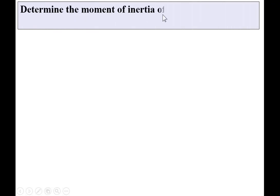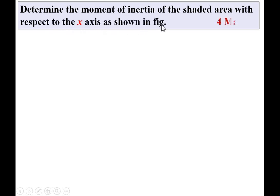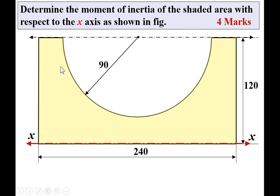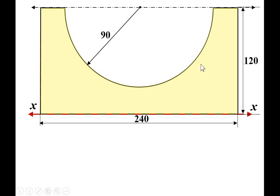Let's take the question first. Determine the moment of inertia of the shaded area with respect to the x-axis as shown in the figure. The weightage of this question in the examination is 4 marks. This figure is given to you, and this is the shaded area. We want to find the moment of inertia of the shaded area with respect to the x-axis — this is your x-axis.